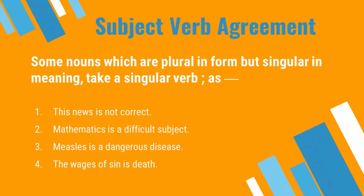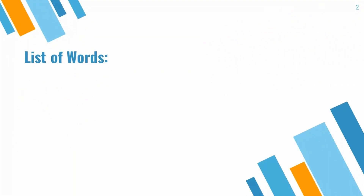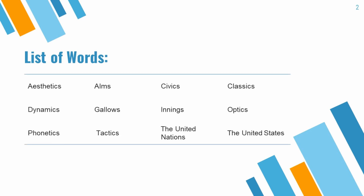Hamare paas ek bahut lambi list hai jo hum yaad kar sakte hain. Main aap ko recommend karungi woh kuch alfaz jo hum zyada tar akhbar mein ya apne mukhtalif subjects mein dekhte hain — unhe memorize kar lein toh aasani hogi. Hamari jitni bhi branches of study hain aur jinke spelling plural hain unka maani singular hota hai, jaise economics, politics, physics, mathematics. Isi tarah tactics ya acrobatics bhi plural hain apni form mein lekin jab hum unka istemal karte hain toh yeh singular ho jati hain.